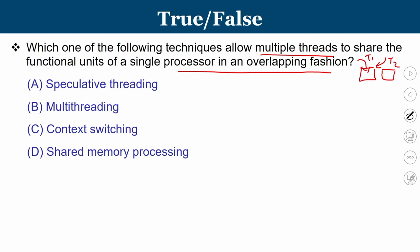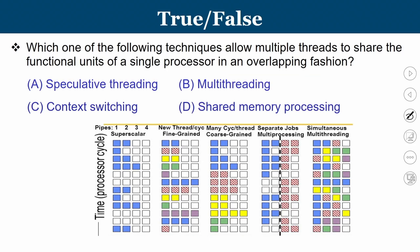There are four choices given: speculative threading, multithreading, context switching, and shared memory processing. Let us look at the differences between these techniques. Superscalar means having multiple functional units, and at a particular clock cycle you see two of the functional units are occupied by the instructions of the threads. Depending upon the available parallelism among instructions, wherever you see blue dots these are slots in which the functional unit is occupied, and white slots show they are not occupied.